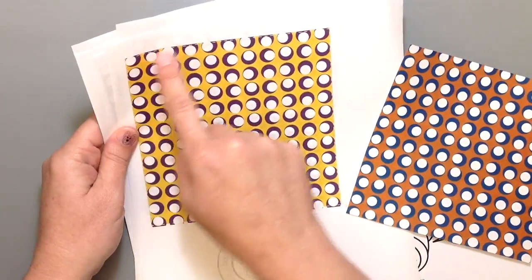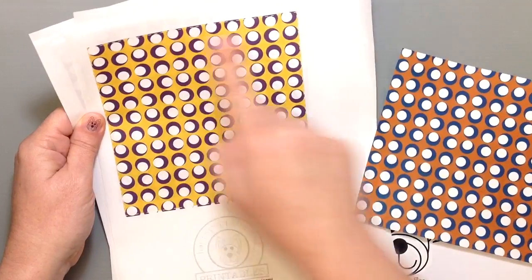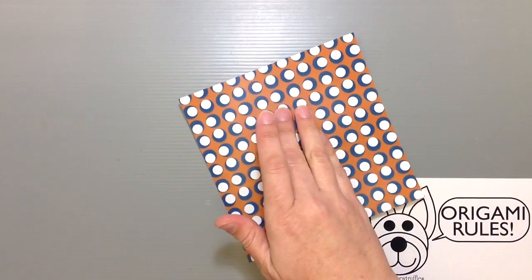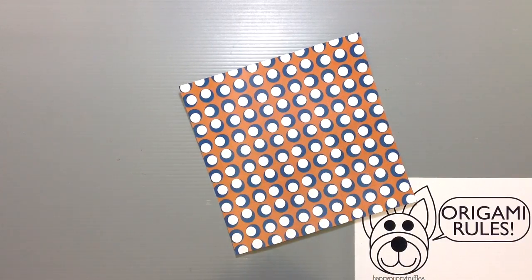When you print them out, you usually get this little dotted gray line around the outside edge, and if you cut that out you get a nice square piece of origami paper.